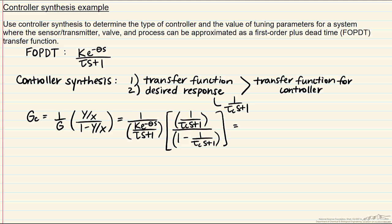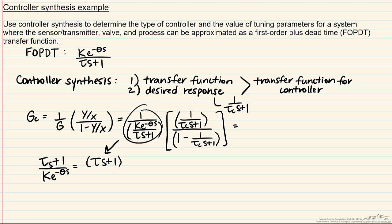When we do the math, we end up with one over k·e^(-θs)/(τs+1), multiplied by 1/(τc·s+1) divided by 1 minus 1/(τc·s+1). Looking at the first term and rearranging, we get (τs+1) divided by k·e^(-θs). Moving the exponential up gives (τs+1)·e^(+θs) over k, multiplied by the second term — which importantly does not contain an exponential.